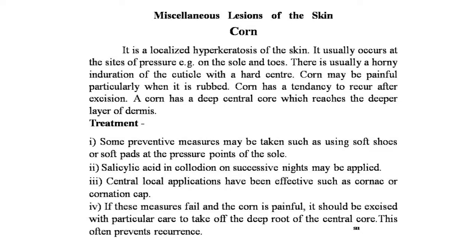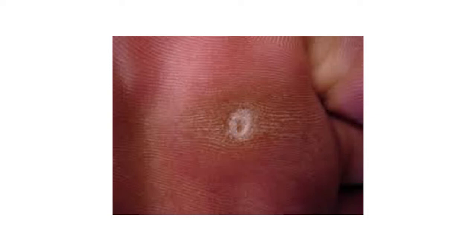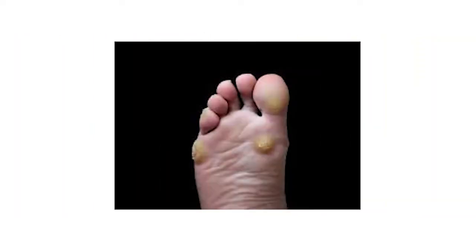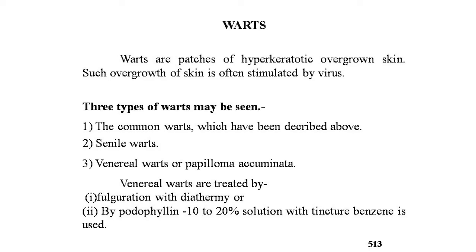Here is the image of the corn, and a second image showing big, painful corns. The next topic is warts — patches of hyperkeratotic, overgrown skin. Such overgrowth of skin is often stimulated by a virus. Warts may occur at any age but are most common in children, adolescents, and young adults. Once they appear, they may persist for many years and sometimes regress spontaneously. A family history may sometimes be obtained.